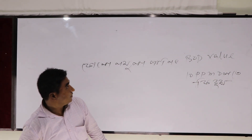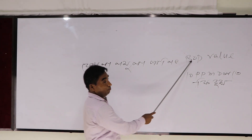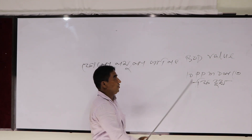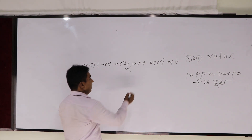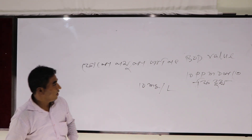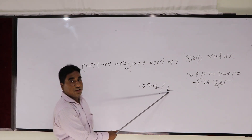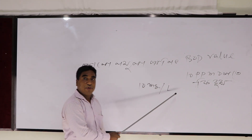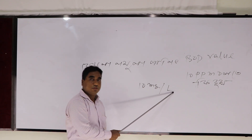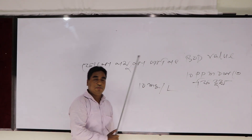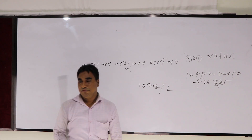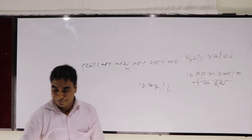If you want to know which value is BOD, it means the value of BOD. How much ppm? 10 ppm. 10 ppm is the value of 10 mg per litre. So we have the limit of 10 mg per litre. The value of BOD is 10 mg per litre.